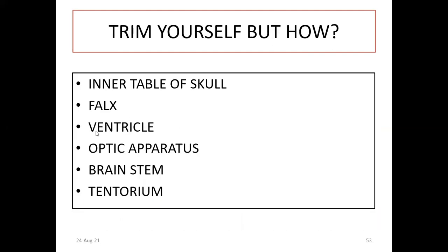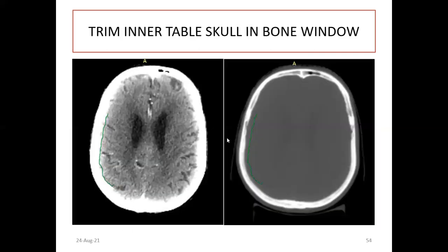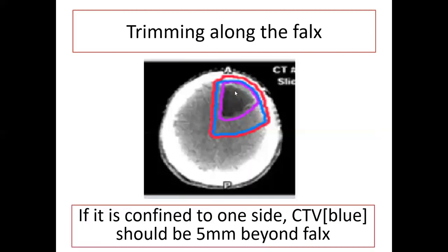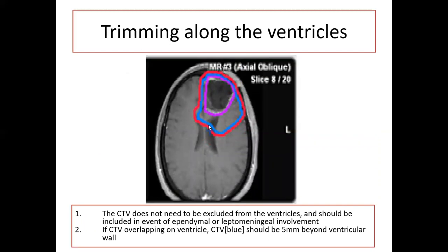How to trim from inner barriers such as skull base, falx, ventricle, optic structures, brain, and tentorium: do not trim along the edge of the falx or ventricle. When using the brain window, you should stay in the bone window for skull bone. Note the difference between grain window and bone window — how much area can be missed. Along the falx, go at least 0.5 cm beyond the falx edge. Along the ventricle, take around 0.5 cm around the ventricle. If there is bone involvement or hyperostasis, include all bone or at least 2 cm margin.